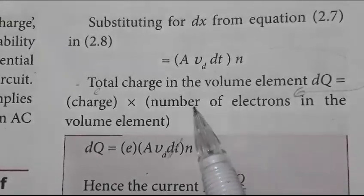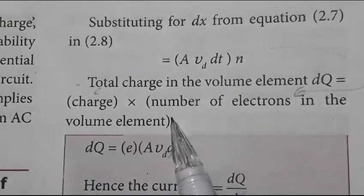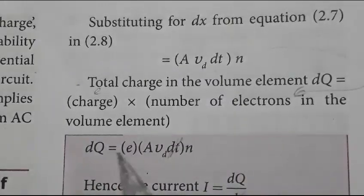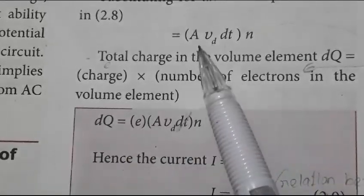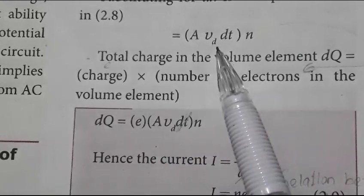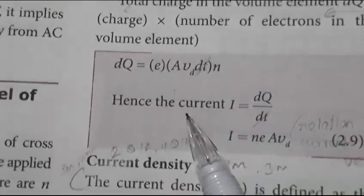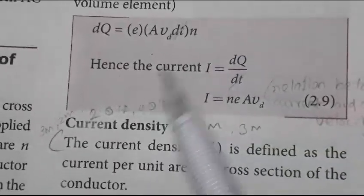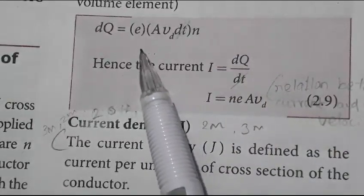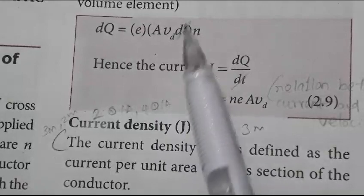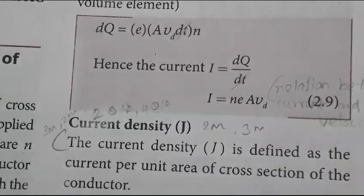The total charge in the volume element dq equals the charge of an electron e multiplied by the number of electrons in the volume element, so dq equals e into A into vd·dt into n. Current i can be expressed as dq by dt, so i equals nAevd.